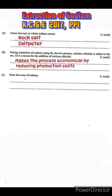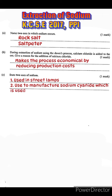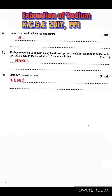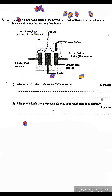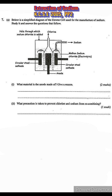Part c: state two uses of sodium. Number one, sodium is used in street lamps. Number two, sodium is used in the manufacture of sodium compounds like sodium cyanide, which is used in the extraction of gold. Let us now move to the next question — this is from 2005 Paper 2.